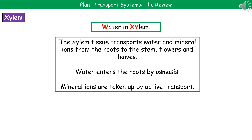In addition to water, the xylem tissue transports mineral ions which are dissolved in the water. It takes the water and minerals from the roots, through the stem, to the flowers and the leaves. When water enters the plant, it does so via osmosis, and the mineral ions are taken up by active transport.